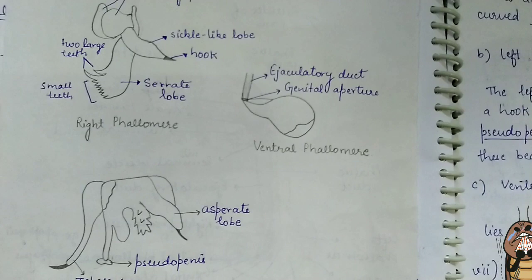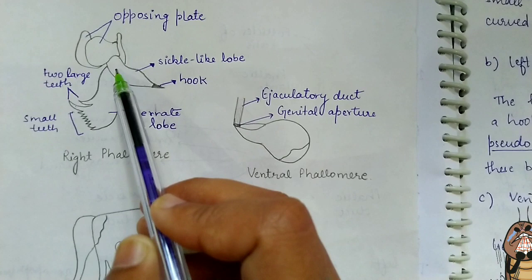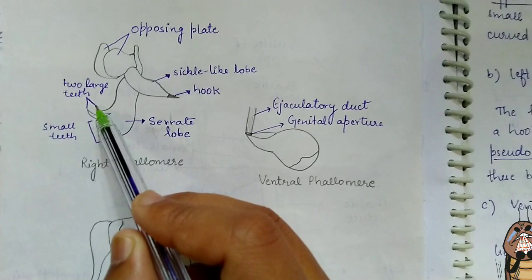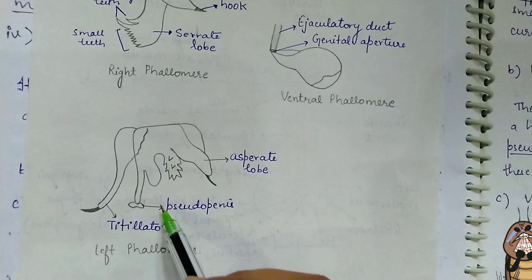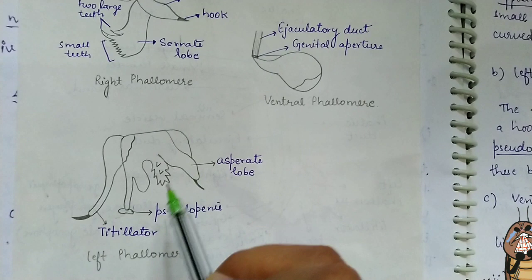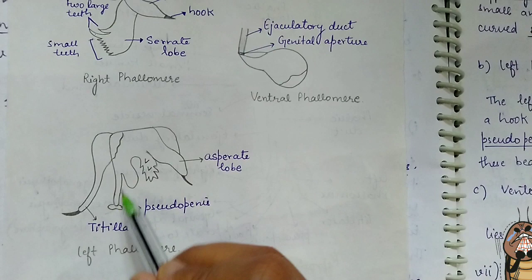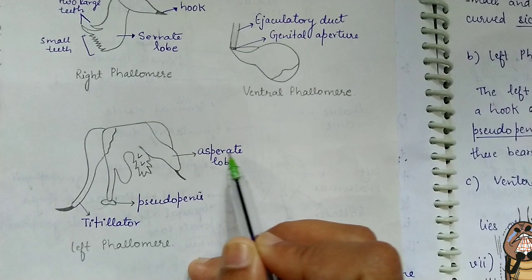The right phallomere consists of a pair of small opposing plates, a large serrate lobe with small teeth at the end, and a curved sickle-like lobe with a terminal hook. The left phallomere consists of a broad base with many arm-like processes. The left arm is called the titillator, which has a hook at the end. Next to it is the pseudopenis, which is a short arm. It also consists of three short arms, the last of which is very broad and is called the asperate lobe, which also has a hook.